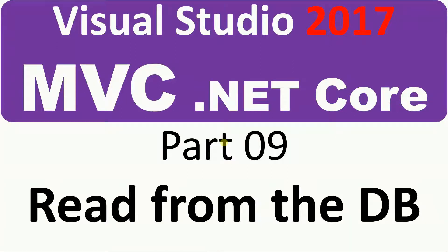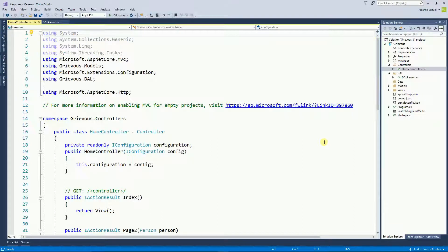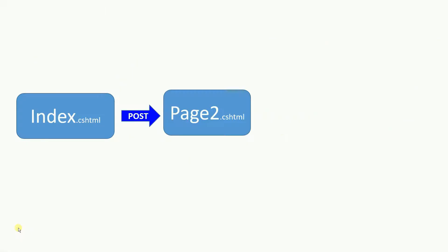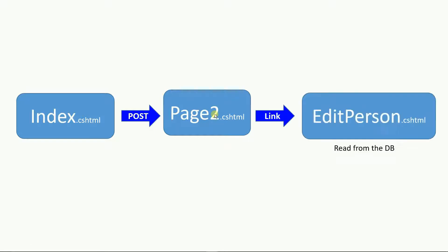In this video I'm going to show you how to read from the database. Here I have the project from the past video. There's an index and a form that posts to page 2, and page 2 displays the values from the index. On this video I'm going to create another view called Edit Person, put a link from page 2 to this new view, and in this view we're going to read from the database.